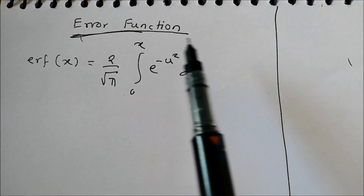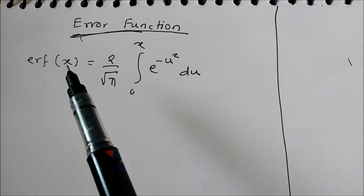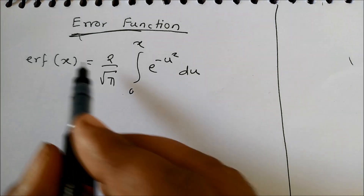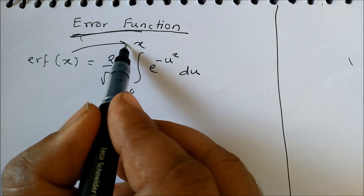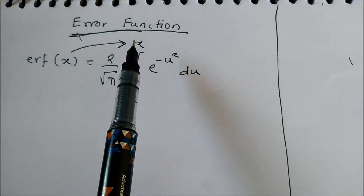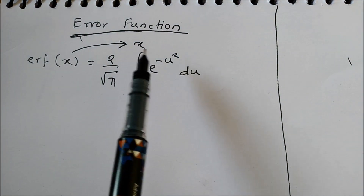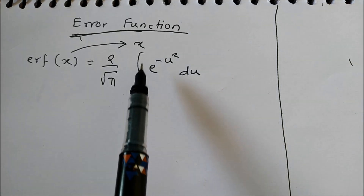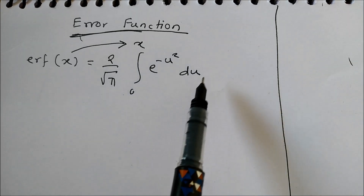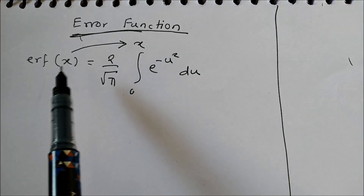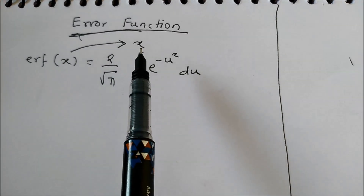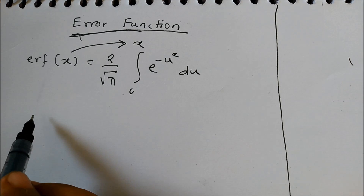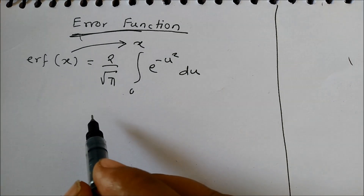If you observe this function, it has an input x, and that input x acts as the upper limit of the integration. The variable x is not involved inside the integration itself. Please note this point: x is involved only as the upper limit of this integration.